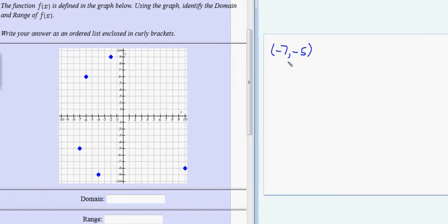This is one point on the graph. Another point that I see has coordinates negative 6 comma 6. Another point would be negative 4 comma negative 9.